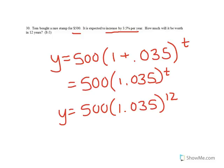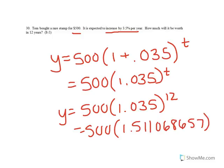Order of operations, do 1.035 to the 12th first. So 500 times 1.511068657. Then multiply that by 500 to find out that Tom's stamp will be worth $755 and 53 cents.